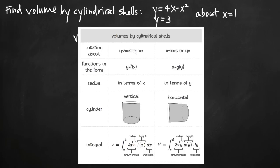So you want to start by asking: what is my axis of rotation? In our problem, the axis of rotation is the line x equals 1, which means we're in the vertical column of the chart. The line x equals 1 is a vertical axis of rotation, so that tells us we need our functions in the form y equals f of x. Sometimes we're given functions in the form x equals something; you'd want to convert those into y equals something. We already have ours in terms of y, so that's fine. This also tells us that our radius is going to be in terms of x.